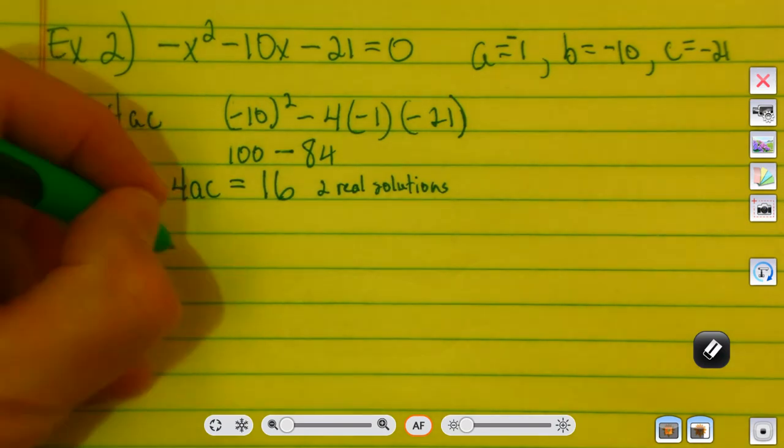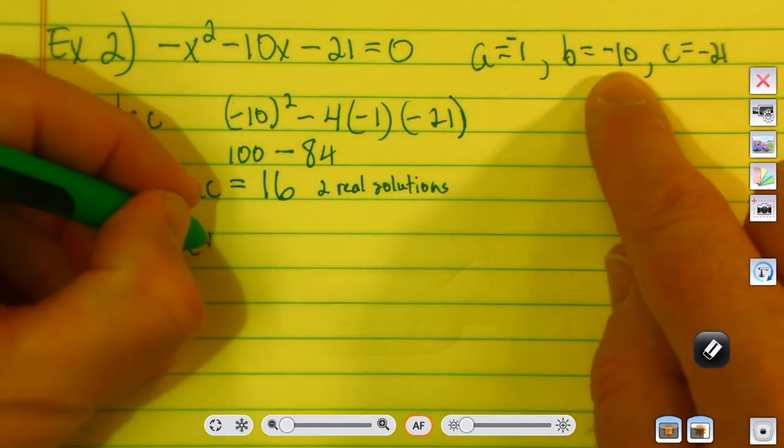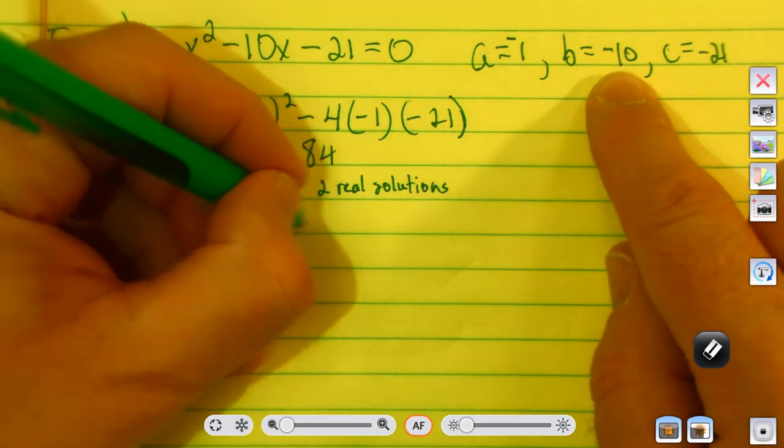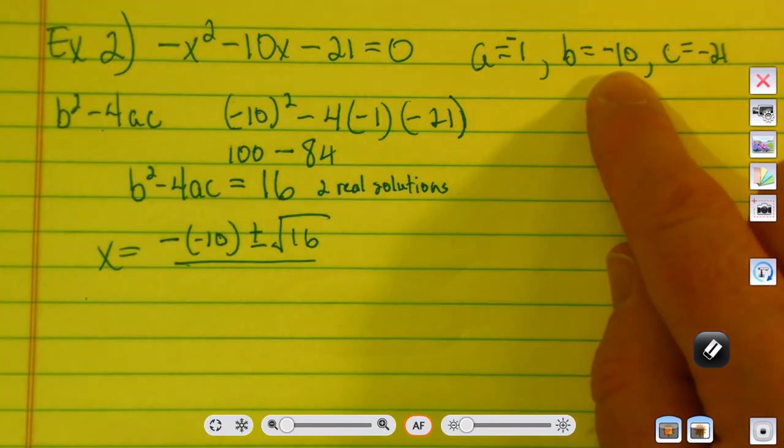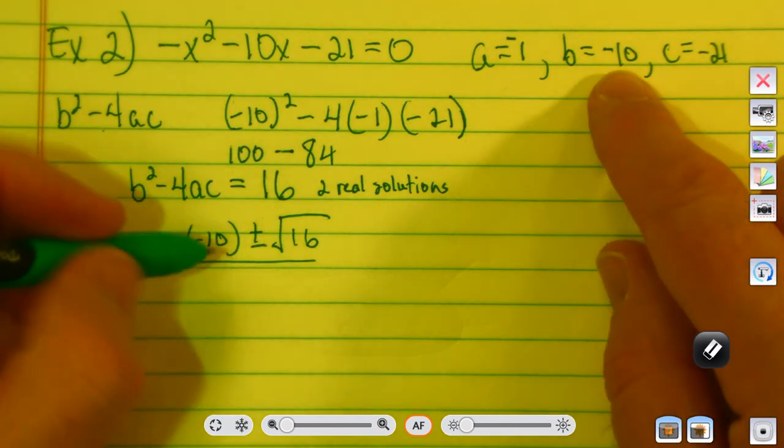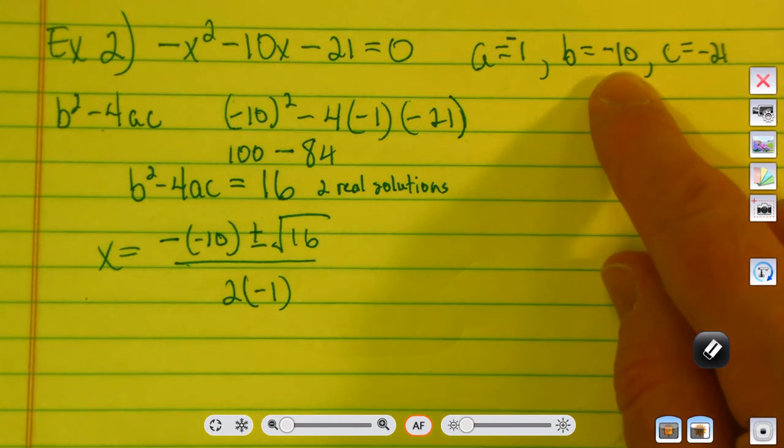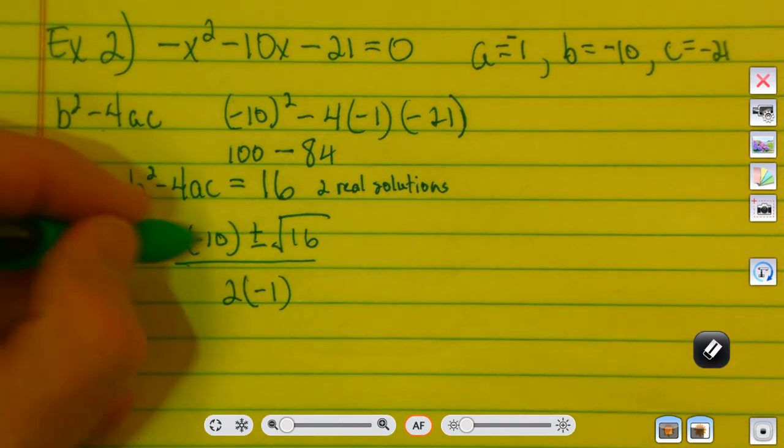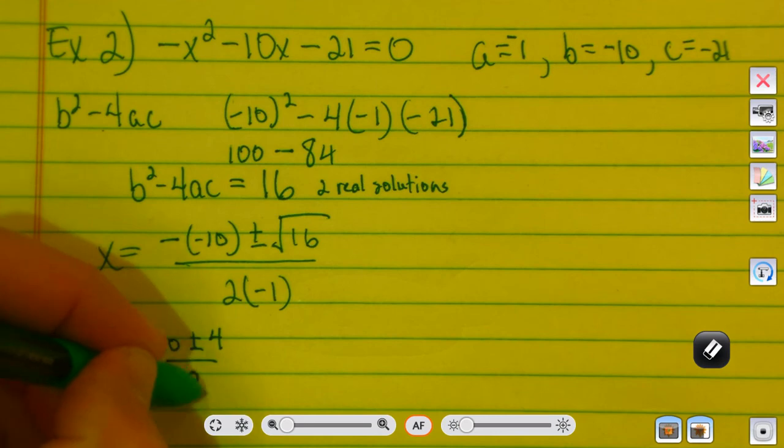So, x will be equal to, then, negative b. Well, remember, b was a negative 10. Plus or minus, now, we've already found a discriminant, so it's the square root of 16. We don't even have a perfect square. That's kind of cool. Now, negative 10, oh, let's go over to it. So, 2 over negative 1. So, then, negative negative 10 becomes positive 10, plus or minus the square root of 16 is 4, over negative 2.